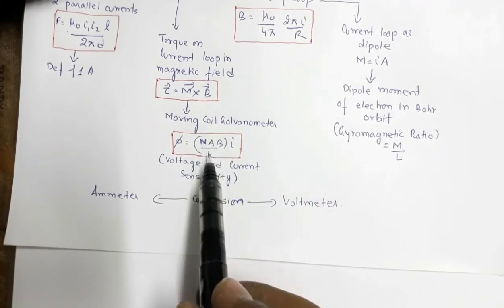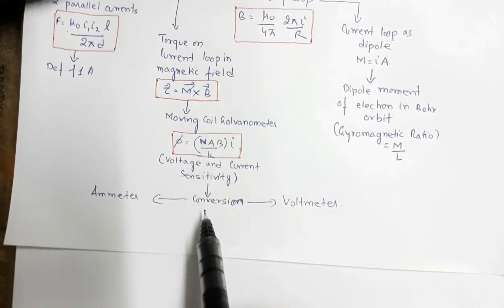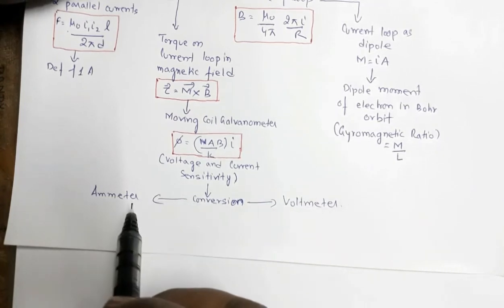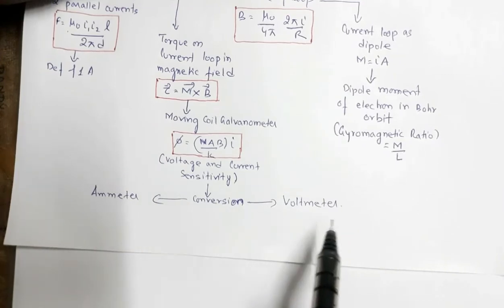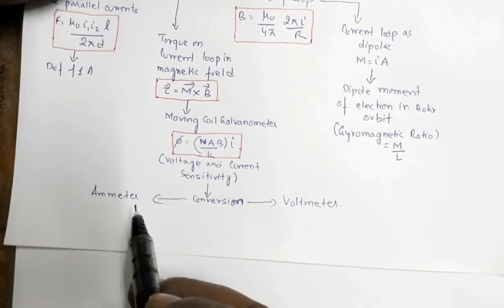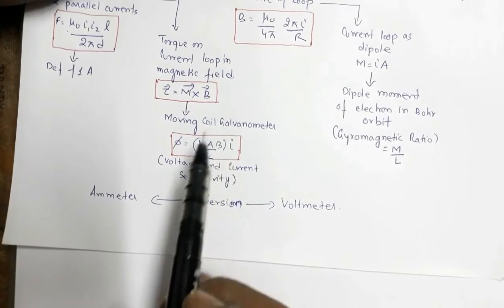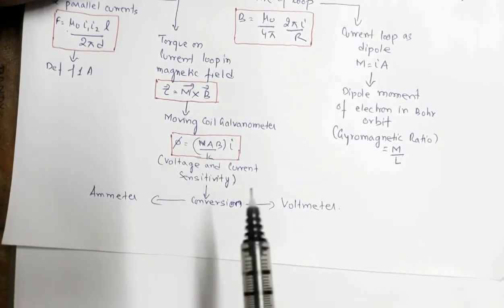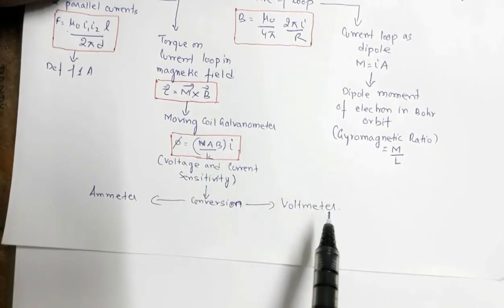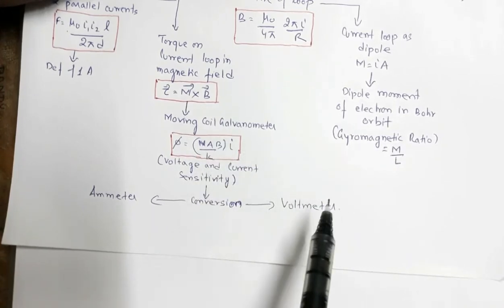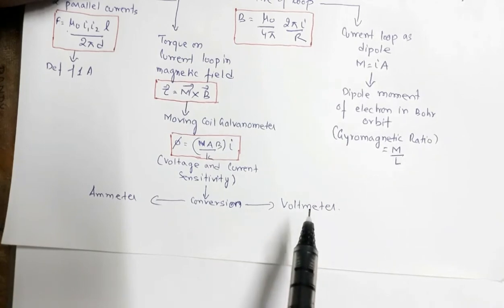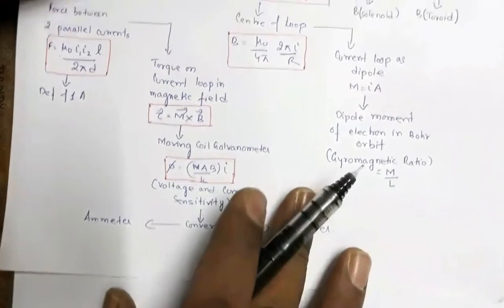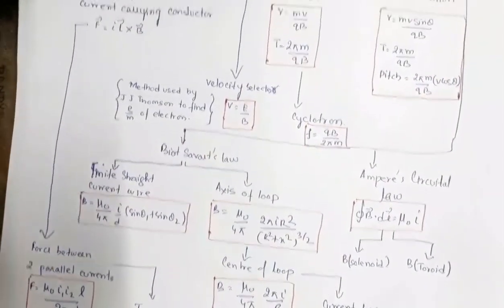The most important application is the conversion of a moving coil galvanometer into an ammeter and a voltmeter. An ammeter is a low-resistance device, so a shunt resistance is connected in parallel with the galvanometer. A voltmeter is a high-resistance device, so a high resistance is connected in series with the galvanometer. These are the key topics covered in this chapter.